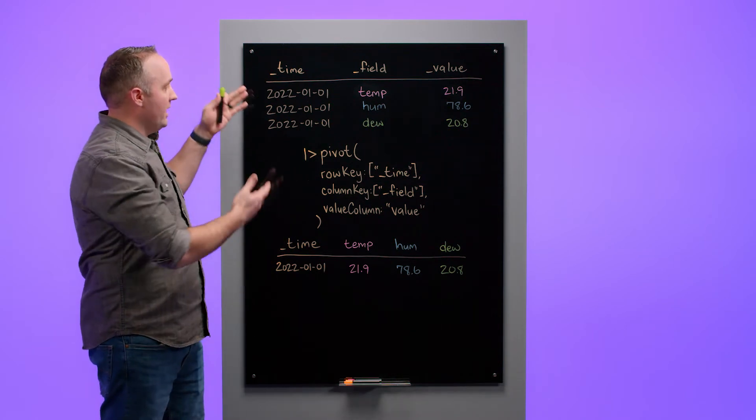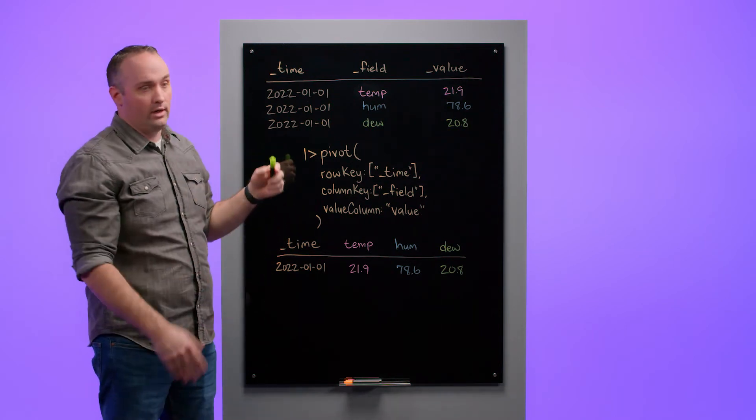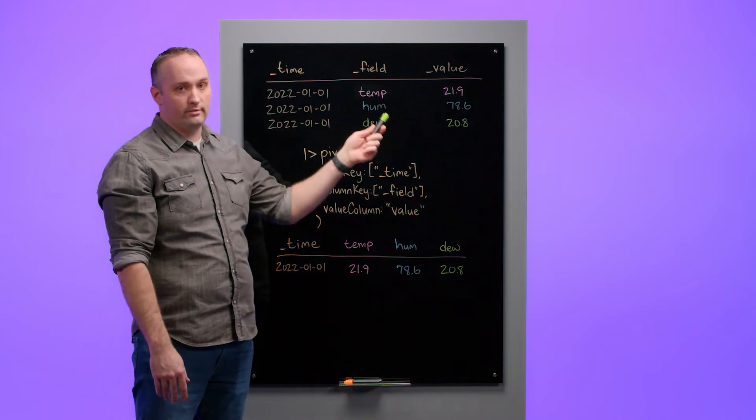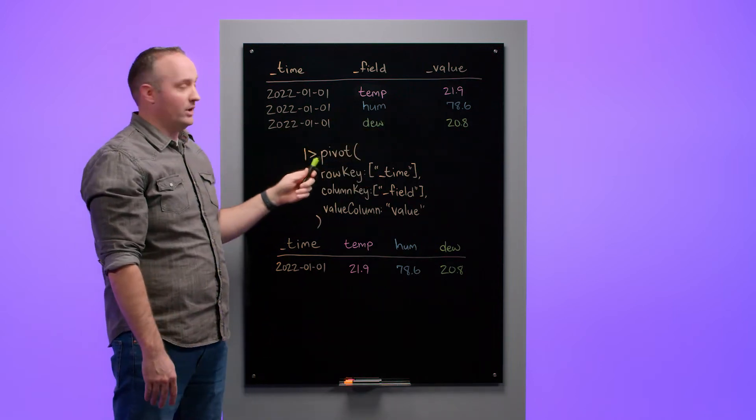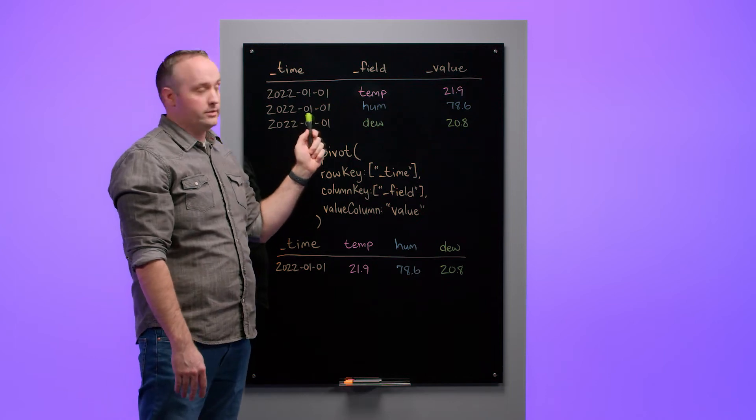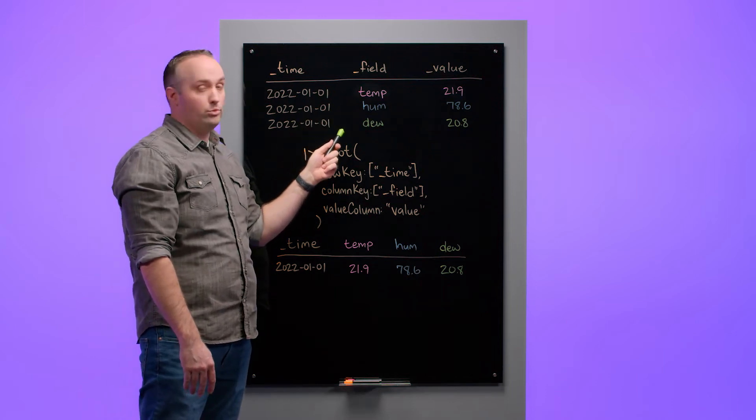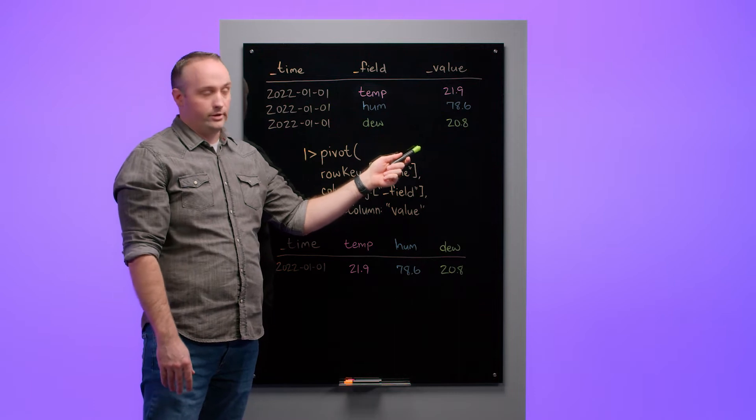For example, I have this input table that has three columns: time, field, and value. If you look closely, all the time values are the same, but I have three unique fields - temperature, humidity, and dew point - and their associated values.